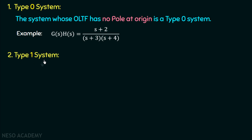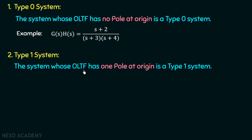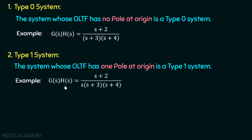The next category is type 1 system. The system whose open loop transfer function has one pole at origin is a type 1 system. For example, if G(s)H(s) = (s+2) / [s(s+3)(s+4)], one pole is present at the origin and that's why the type of the system is equal to 1. Note: even though it is a unity feedback system with H(s) = 1, we still represent the open loop transfer function as G(s)H(s).